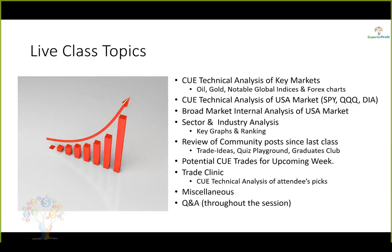As usual, we will go through technical analysis using the Q system of key markets — oil, gold, global index for India, and some Forex charts. Then we will look at the USA market in terms of SPY, QQQ, DIA, before going into broad market sector and industry analysis using graphs and ranking. We will look at some trades posted since last class in our traders community and discuss any trade ideas for the upcoming week. You can ask questions at any time using the Q&A panel. I will address all questions before we end today.